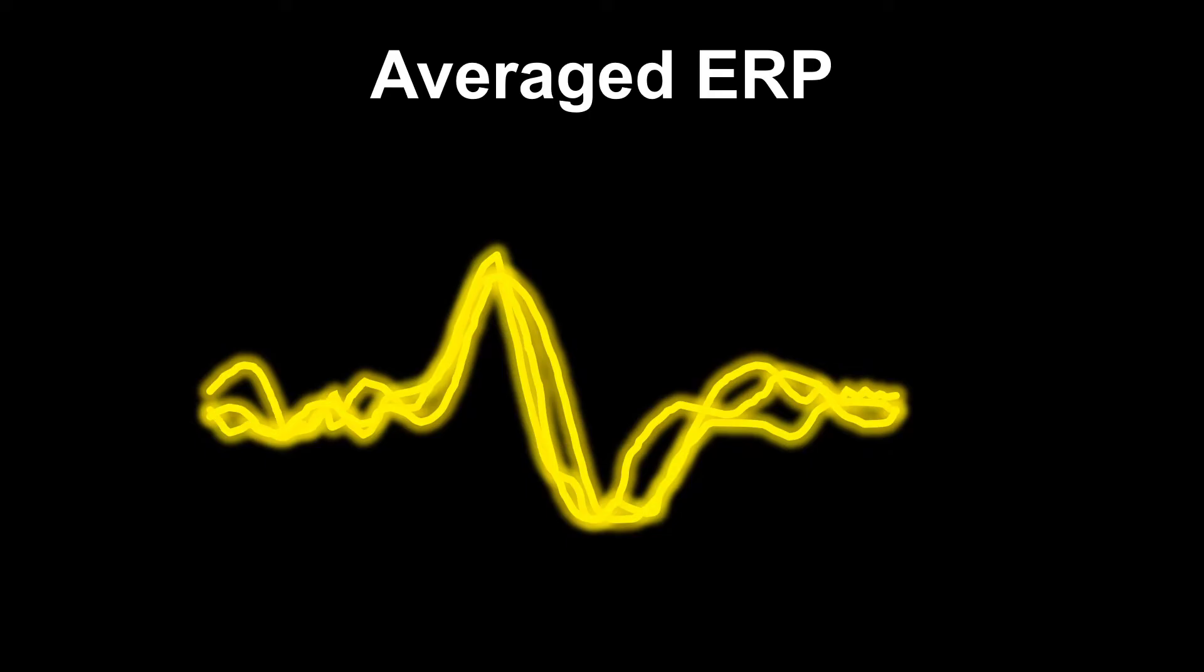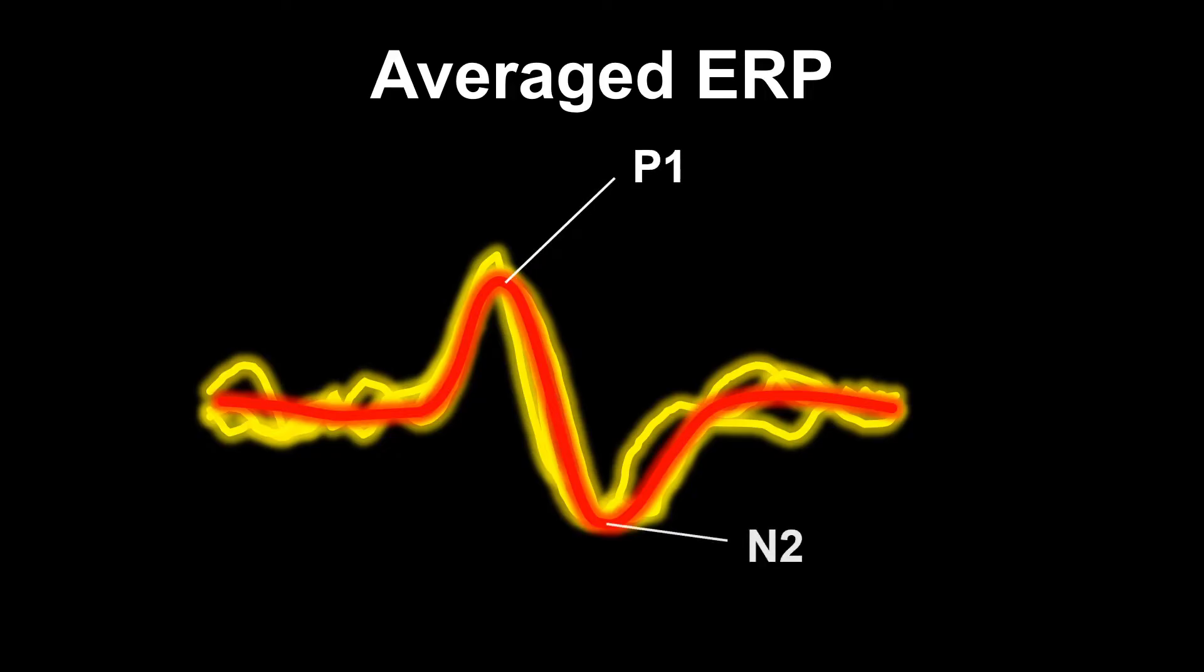This will result in a particular pattern, where certain deflections in the signal have particular meaning and are related to different functions in the brain. So basically, ERPs are just an averaged brain signal.